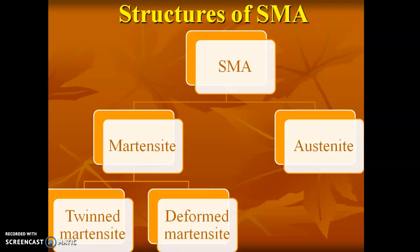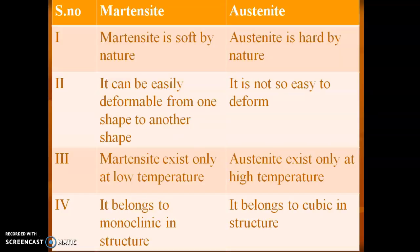This is the structure of an SMA — shape memory alloys. It is classified into two types: martensite and austenite. Martensite is further classified into two types: twin martensite and deformed martensite. The key difference is that martensite is very soft in nature, while austenite is very hard in nature.